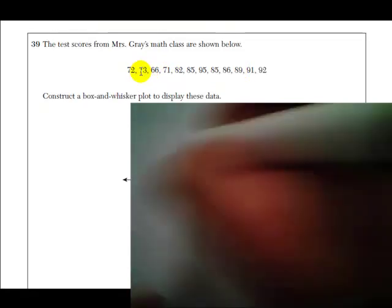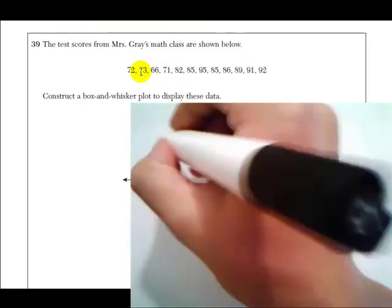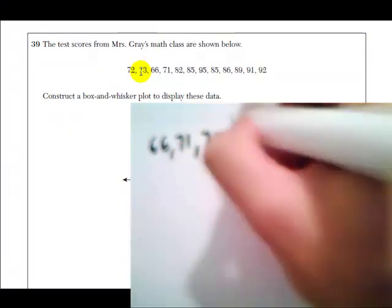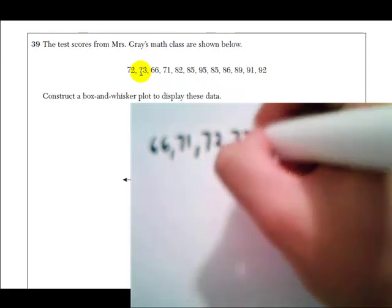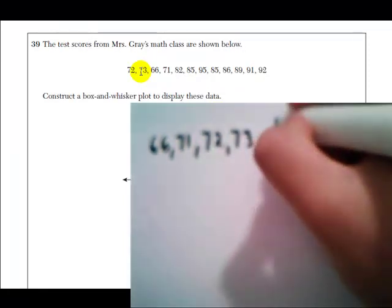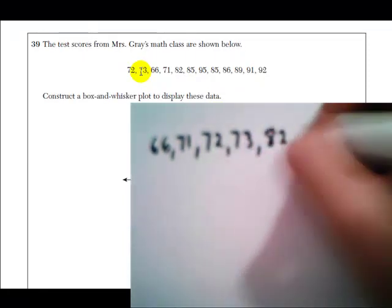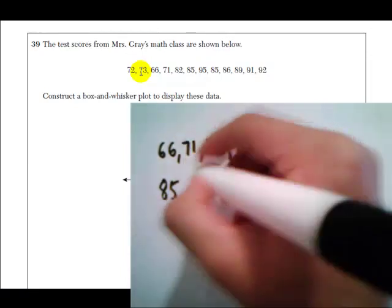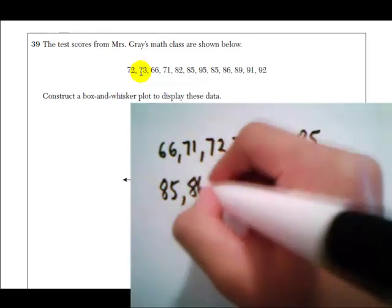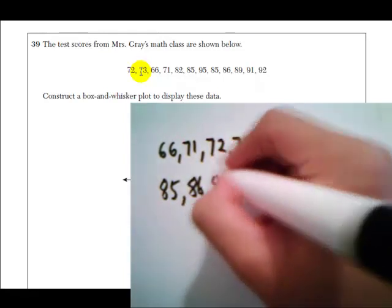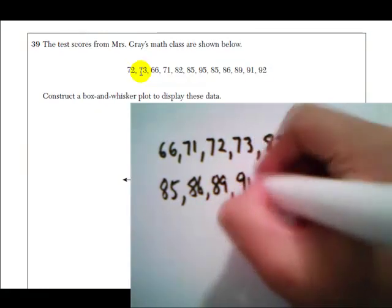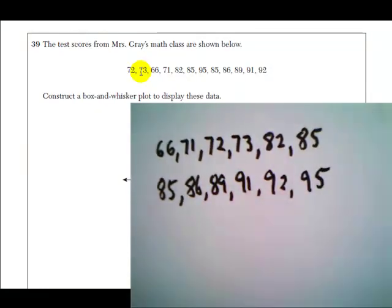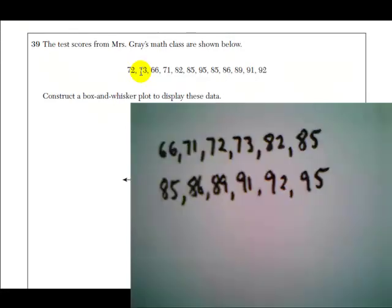In order from least to greatest, these numbers are 66, 71, 72, 73, 82 is next, followed by 85. There are actually two 85s here, 86, 89, 91, 92, and 95. Okay, so those are the 12 numbers in order from least to greatest.